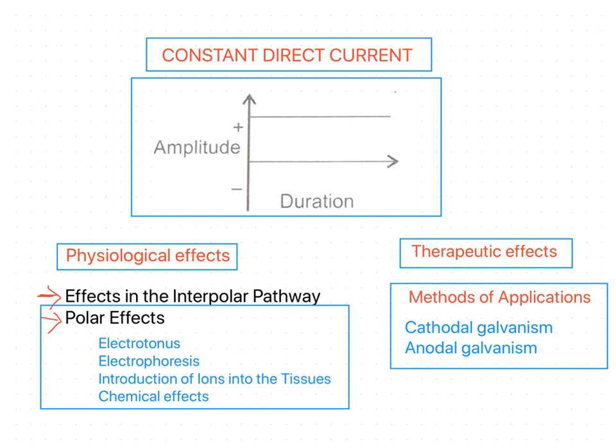Welcome back. In this session we are going to discuss the constant direct current, which is also sometimes known as constant galvanism. If you see the graph, it is a unidirectional current of unvarying intensity. Faradic current as well as galvanic current are also direct currents, but they are interrupted direct currents.